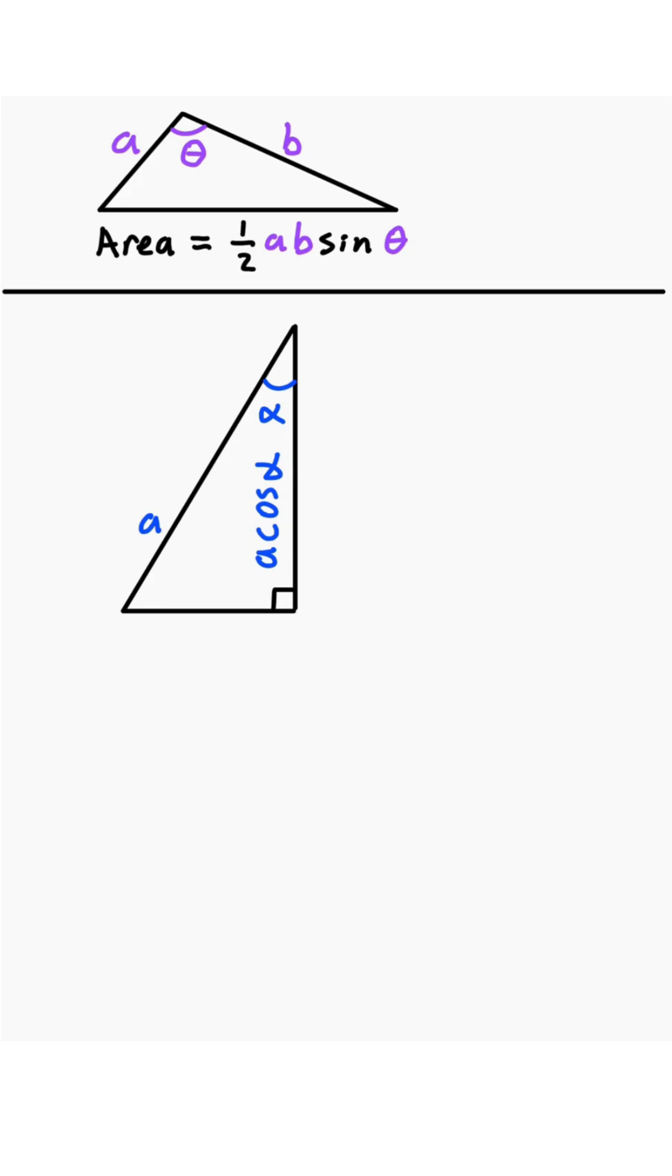Now, let's make another triangle with the exact same height, such as this triangle. We'll call this angle beta, and this hypotenuse we'll call B. Then its height is going to be B cosine of beta.